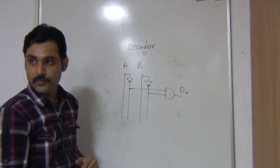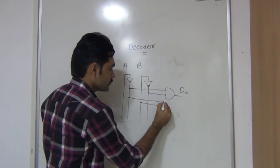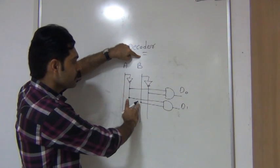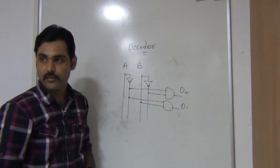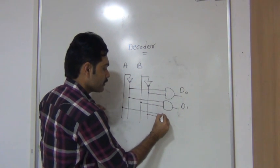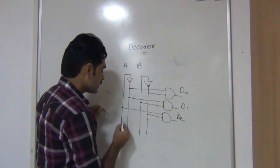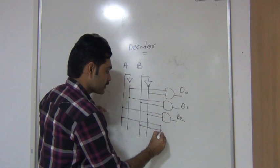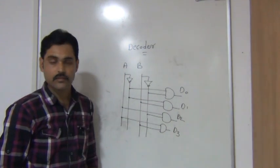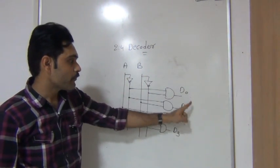The next case is 01, which means A-bar and B. Connecting A-bar and B to an AND gate gives D1. Whenever you apply 01, you will get 1 from A-bar and 1 from B, so D1 will be 1. The next case is 10, which means A and B-bar, connected to give D2. The last case is 11 - I take connection from A and B, giving D3. This is the complete circuit for the 2-to-4 decoder: 2 inputs and 4 outputs.